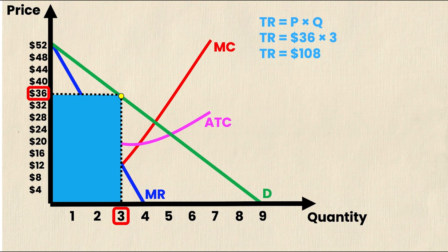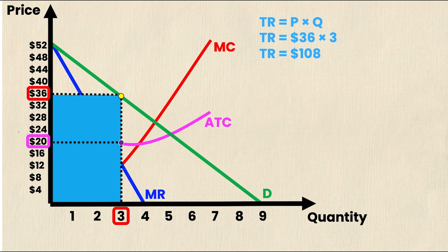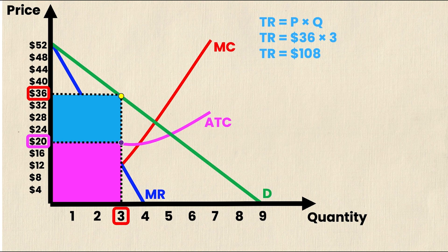But total revenue and profit aren't the same thing. There's another important factor to consider and that's cost. So let's take a look at what the average total cost is when the quantity is equal to 3. So we can follow that to the axis and we get $20. That $20 is the average total cost when 3 units are being sold. Why are 3 units being sold? Because that's the intersection of MR and MC. So now we've got this new pink rectangle and this rectangle represents the total cost.